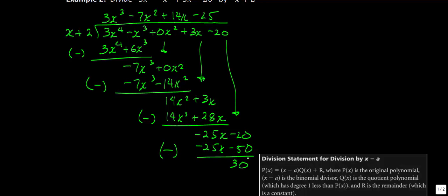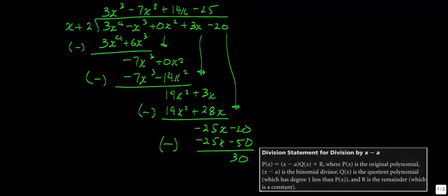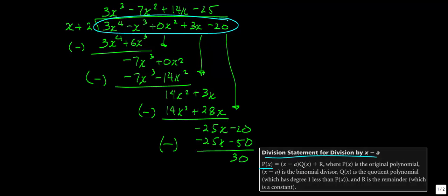So we have our quotient up here, our remainder, our binomial, and our original polynomial. Some questions are going to ask you to write a division statement once you've done your division. The division statement looks like this: you take your polynomial, multiply it by your divisor — which is our binomial — multiplied by the quotient, and then you add the remainder. Let's do that for this question so you can practice what that looks like.